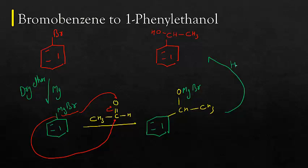We get our product. So convert the bromobenzene into Grignard reagent, then react it with ethanal, followed by hydrolysis to get our product.